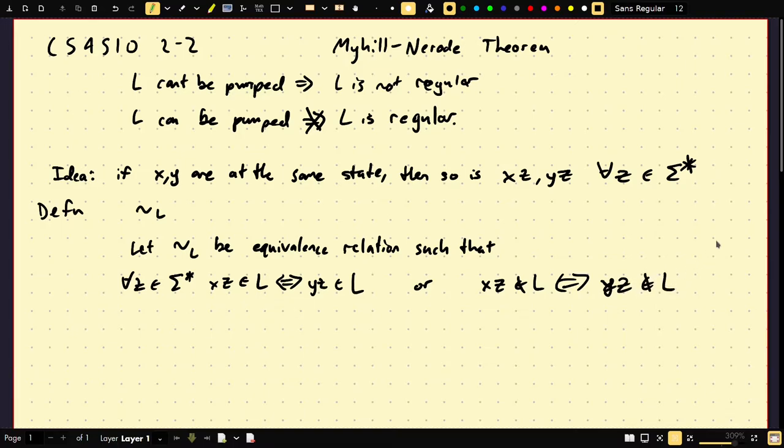So appending Z will either keep XZ and YZ both in L, or both not in L, right? So if we take Z equals the empty string, then both X and Y are in L, or both not in L.